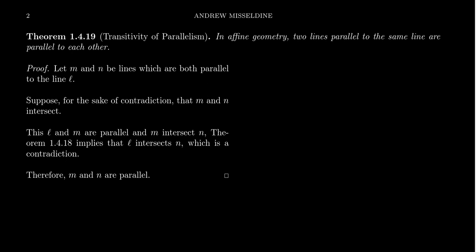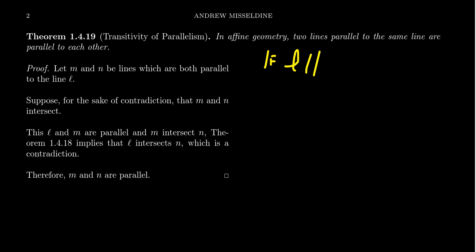Transitivity of parallelism tells us that if two lines are parallel to the same line, they're parallel to each other. We're trying to prove: if L is parallel to M and L is parallel to N, then M is parallel to N.